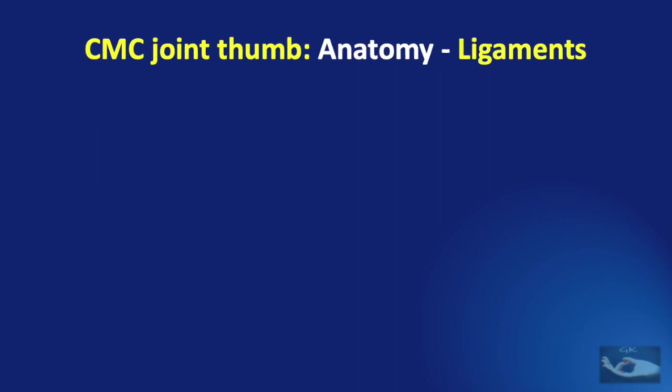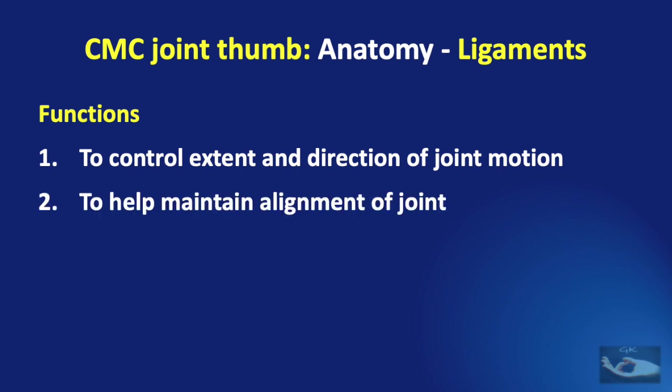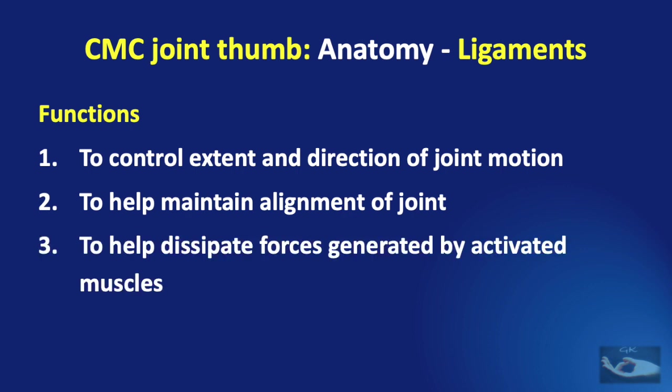Apart from providing stability to the carpometacarpal joint of the thumb, the ligaments also control the extent and direction of joint motion. They help to maintain the alignment of the joint and to dissipate forces generated by the activated muscles working on the joint.